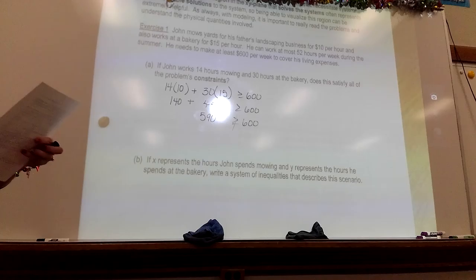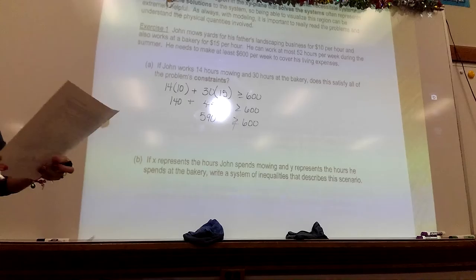That's $590, he's supposed to make at least $600, does it? No. So, does that satisfy all of the constraints? No. He is within the hours. The hours is 44, that's less than 52, that's okay. The problem is that he's not making the dollar amount that he wants to make.